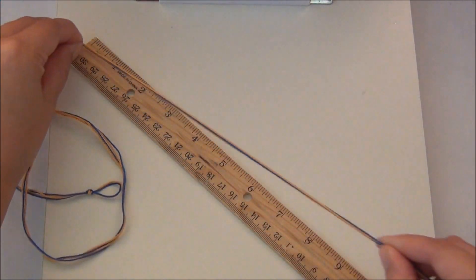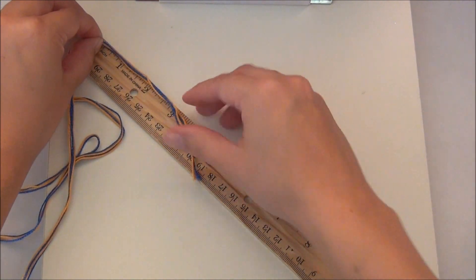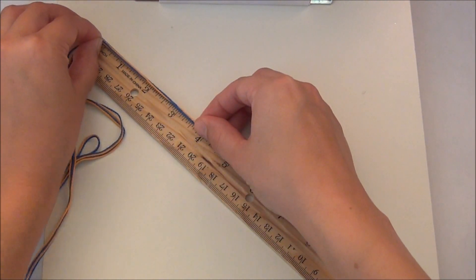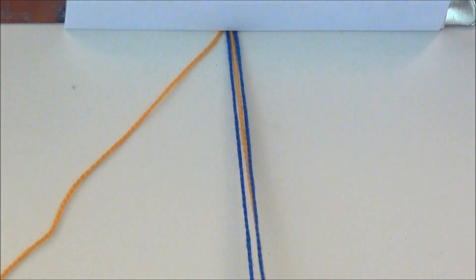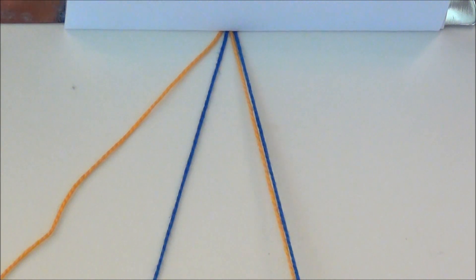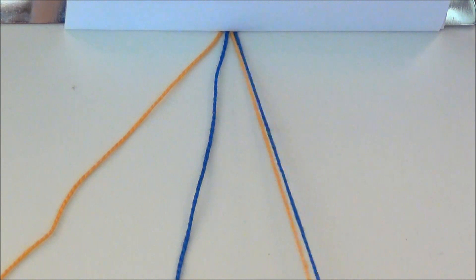Clip the knot into the top of your clipboard and arrange your strings. I'm just doing a regular candy stripe and I'm only using two strings in this one. Since I folded them over, that makes them four, just to keep it nice and simple.